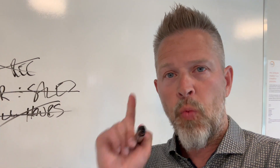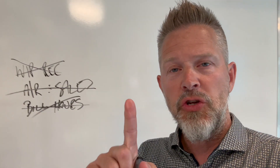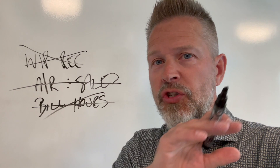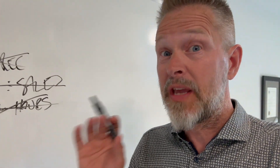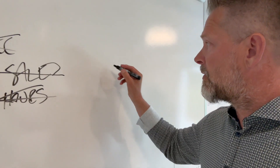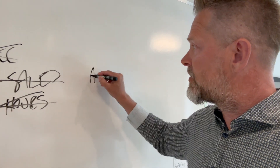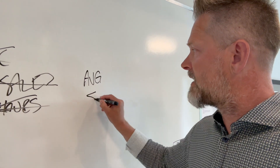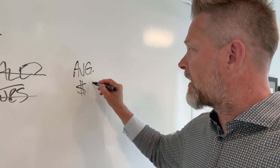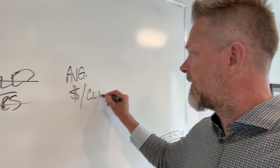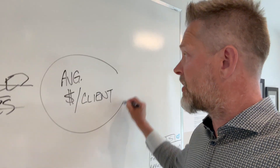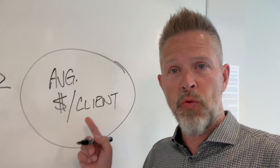There is one metric and one metric only that you should be hyper-focused on. When you get this one right, it will change everything in your accounting practice. It will give you the three freedoms that I talk about all the time. And what is that number? The number is your average price per client.